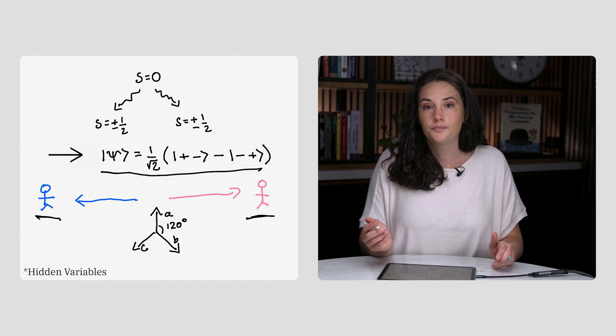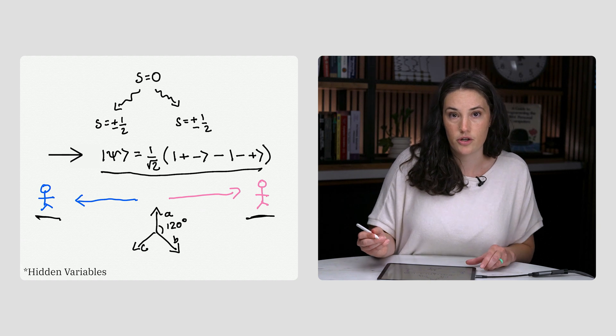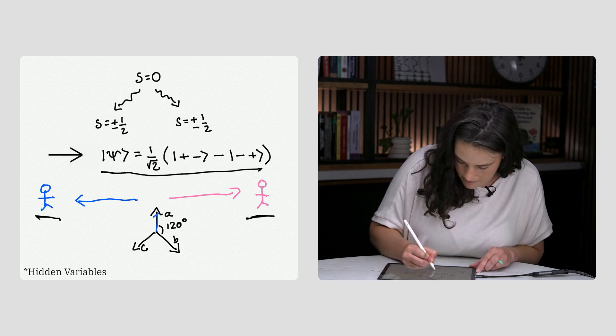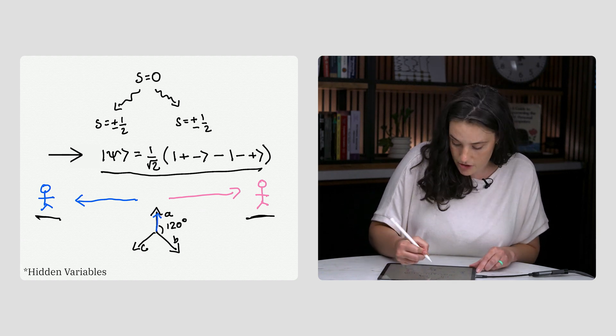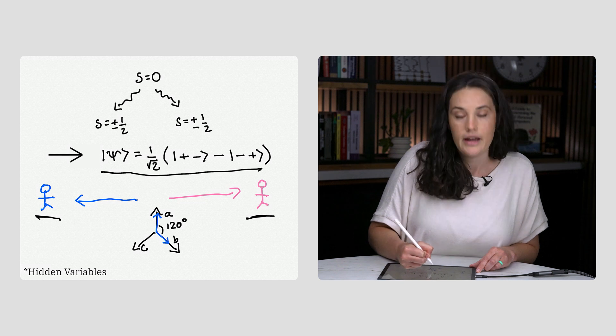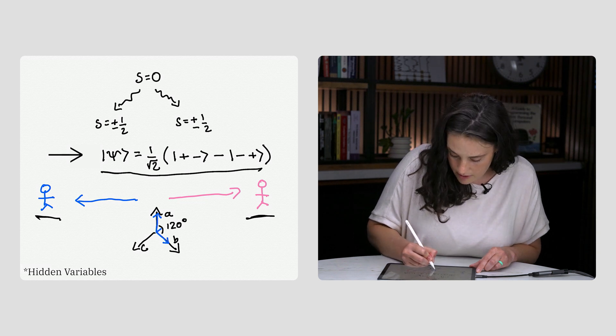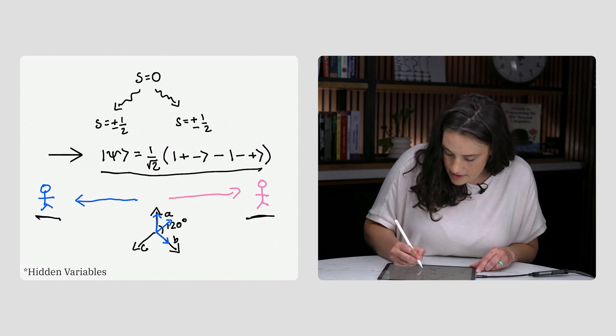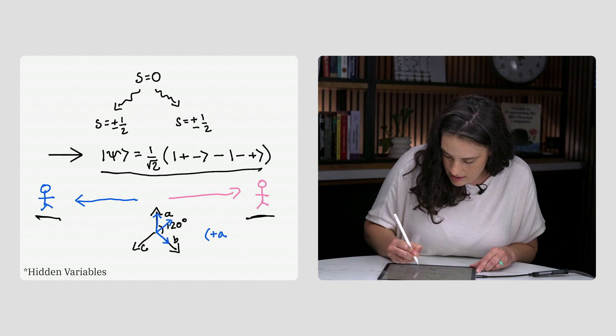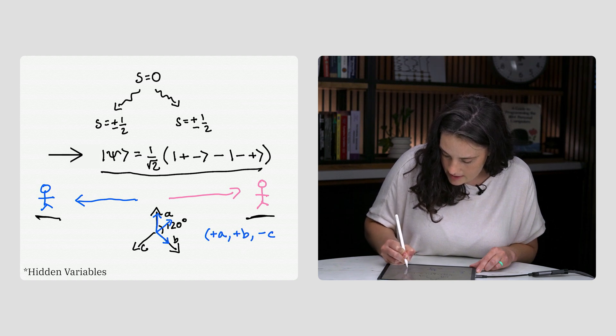For example, these instructions could be positive if Lucas measures along axis A, positive if he measures along B, and negative if he measures along C. We can write this as plus A, plus B, and minus C.